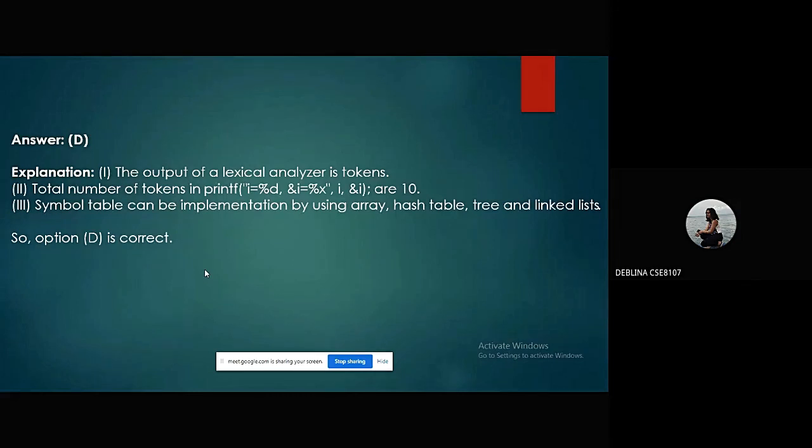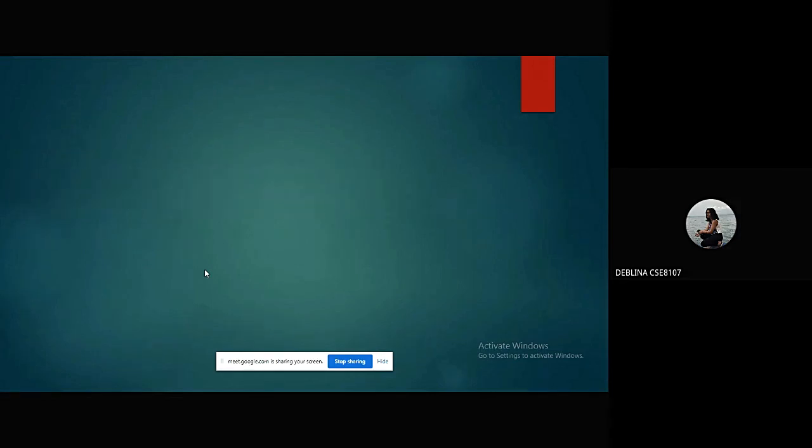The explanation being: the output of a lexical analyzer is tokens. Total number of tokens in the printf statement are 10. Symbol table can be implemented by using array, hash table, tree, and linked lists. So option D is correct. Next, I will hand over to Anvesha.